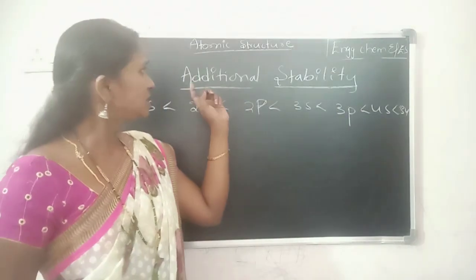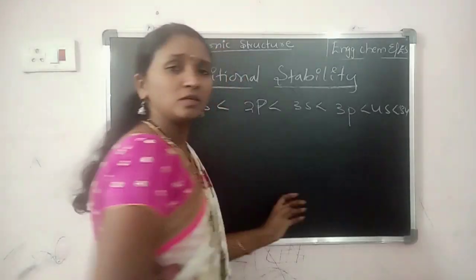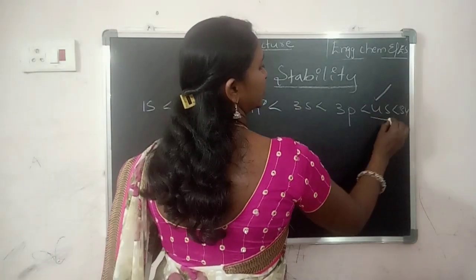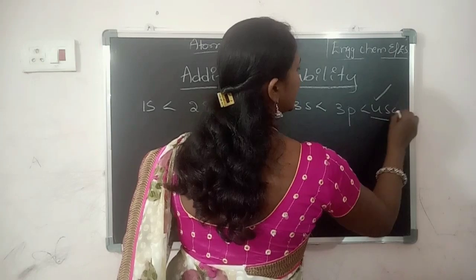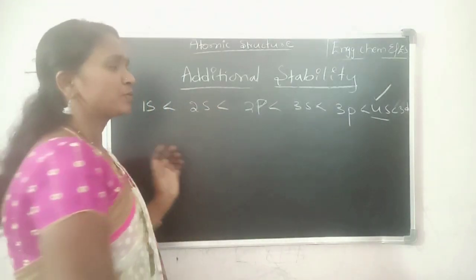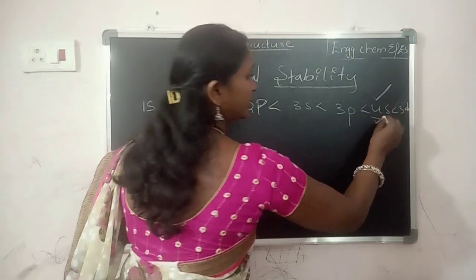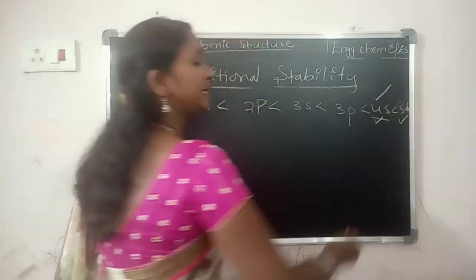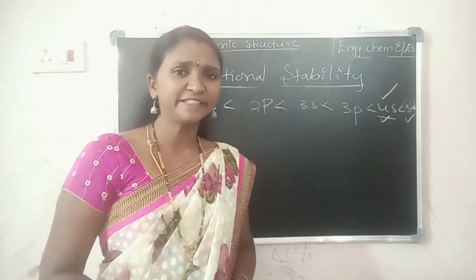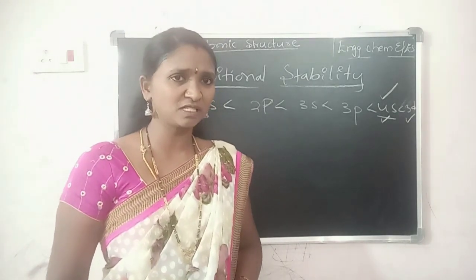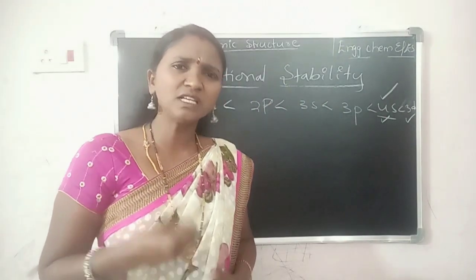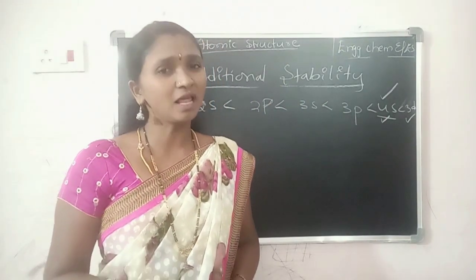Now, what is additional stability? According to this order, electrons are first filled into 4s and then only the electrons are filled into 3d. But how does the arrangement of electrons take place to get additional stability? The arrangement of electrons for additional stability is different.